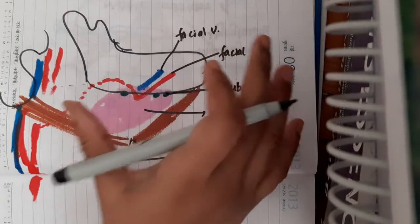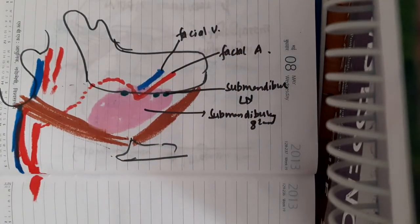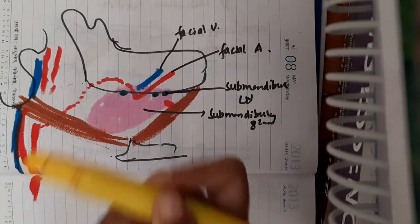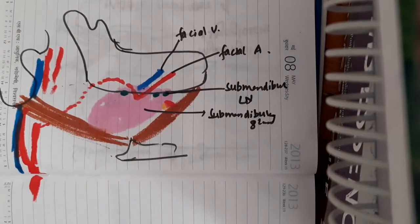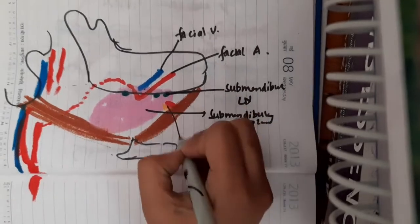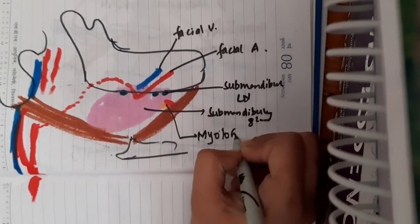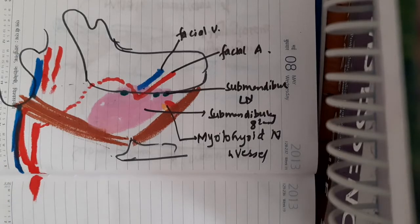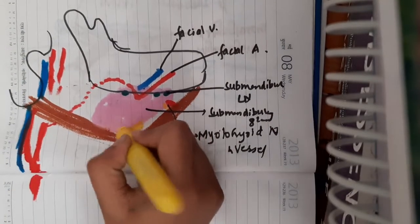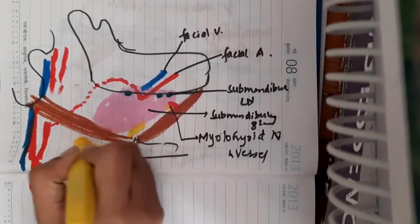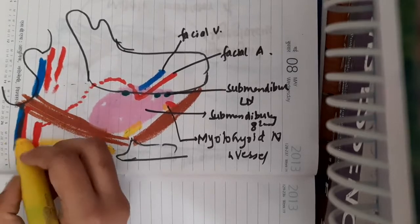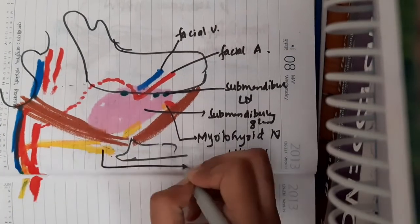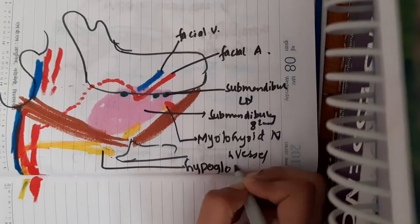Also seen in the anterior part of the triangle are small branches of the mylohyoid nerves and vessels. Additionally, one important cranial nerve — the hypoglossal nerve — is seen in the anterior part of the triangle. You do not need to know its full course; you just need to identify it.